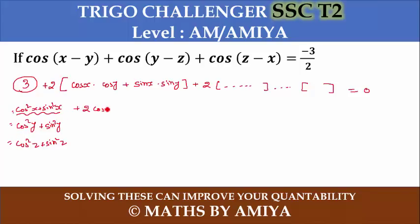Plus I write here 2 cos x into cos y plus 2 sin x into sin y. Then you have cos² x + cos² y + cos² z plus 2 cos xy plus 2 yz plus 2 zx.